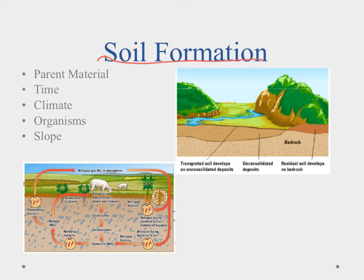Now let's talk about soil formation. There are a bunch of different factors. The first is parent material. The bedrock — the original undisturbed rock layer — gets broken down through weathering. If it stays in place, we end up with residual soil, where the sediments just stay right there. If the sediments are transported by a river through erosional processes, we end up with transported soil — moved from the location where it broke down from the bedrock.